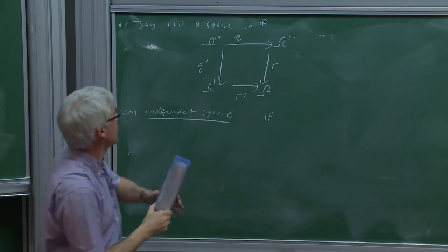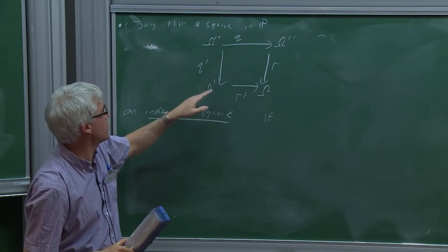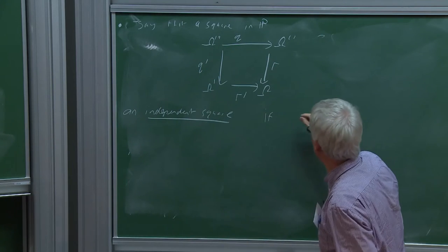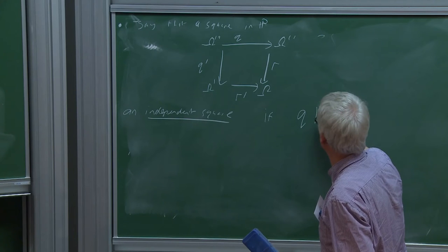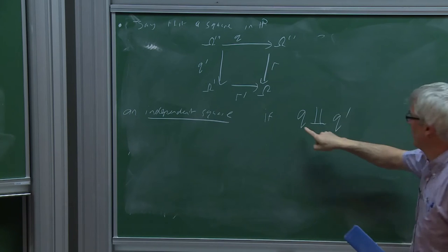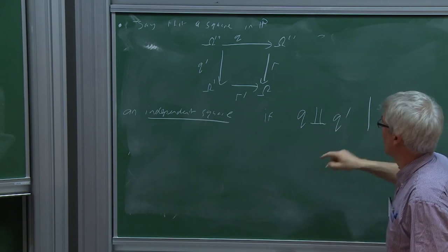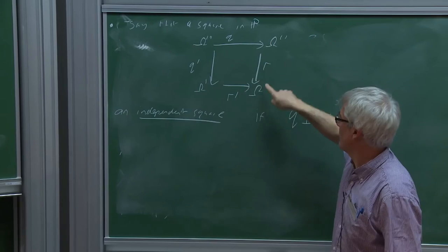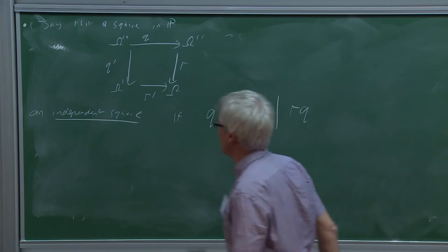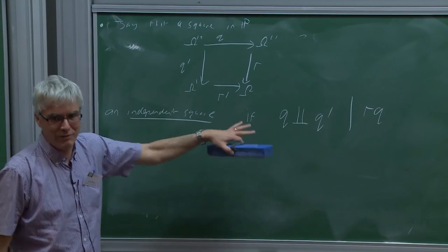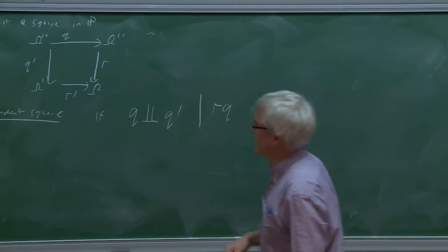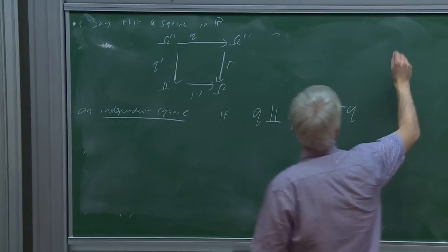An independent square means the two variables q and q' as random variables are conditionally independent given the composite random variable down to the bottom. Conditional independence is a well-known concept in probability theory. The proposition is that for every cospan in P there is a universal independent completion.